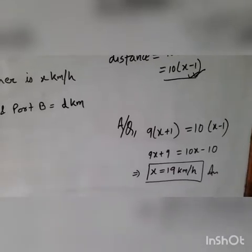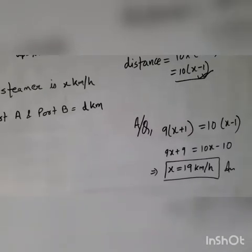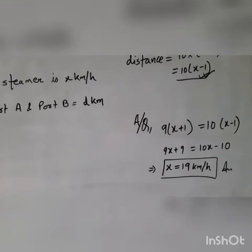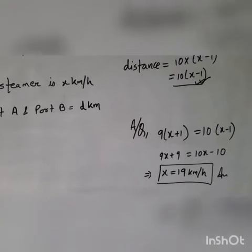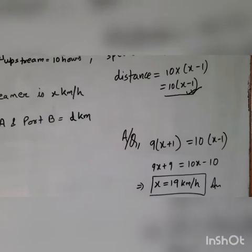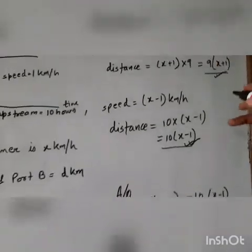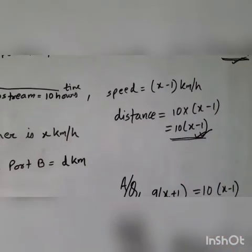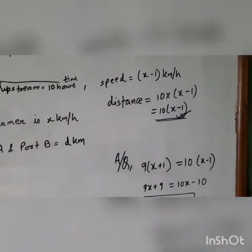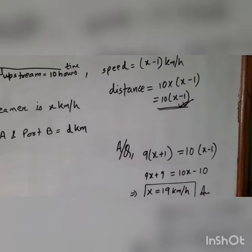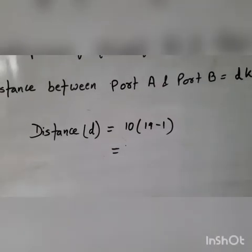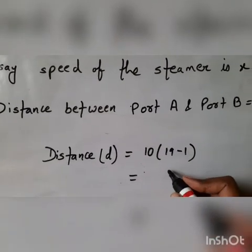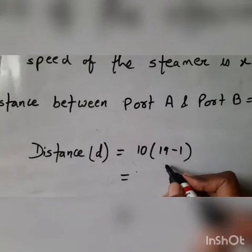If still you have any question post it. So we got speed of the steamer in still water. Now the question also asked distance between the ports. So for distance we have two equations. First is 9(x + 1) and second is 10(x - 1). You can put the value of x in any of this and you will get the answer. So let's try that. So distance equals, I have taken the second equation, 10(x - 1). I put the value of x which is 19 here.